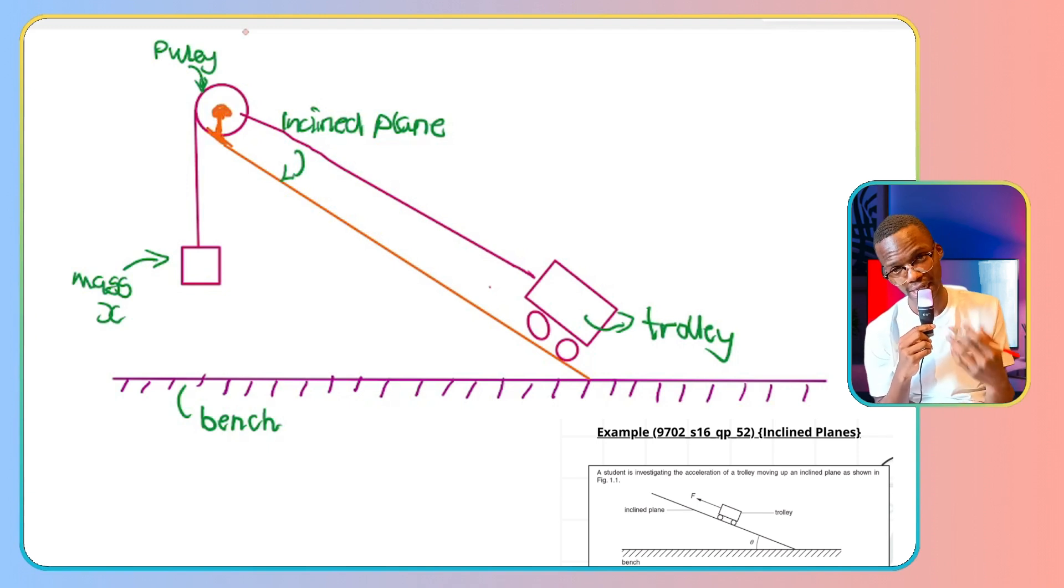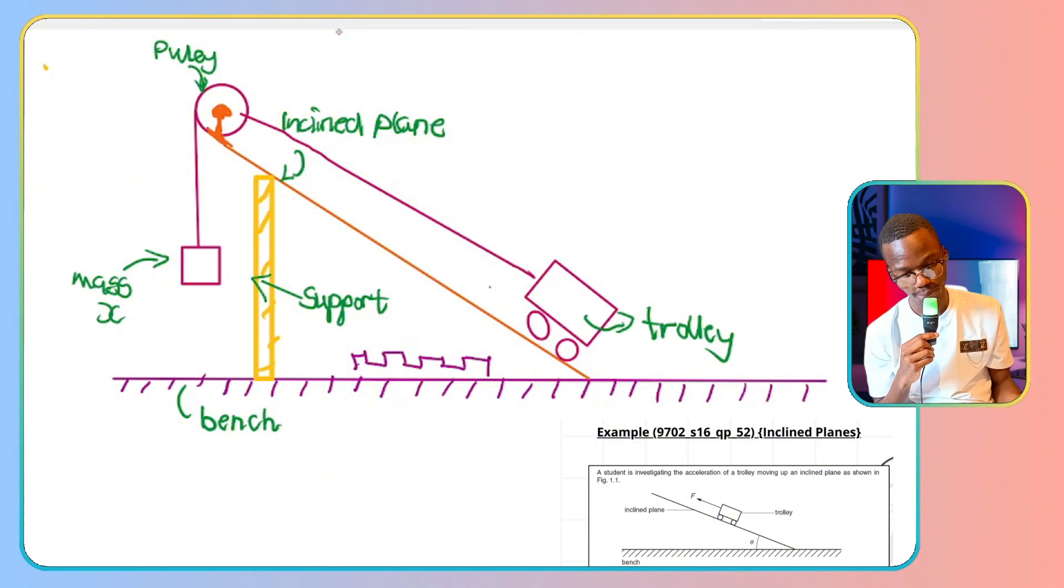Then I now want to support my inclined plane. There are two methods for supporting. Either I just put something like this, then I say this is my support. Or you can put a series of bricks, one, two, three, four, five. That could be also your support. Or you can put something like this, a little diagram that I normally draw. Something just like that. Or something like this. Then we call this our support. And then, to measure the angle theta, I'm going to draw something like that. Then I'm going to label my protractor. And that will be it.